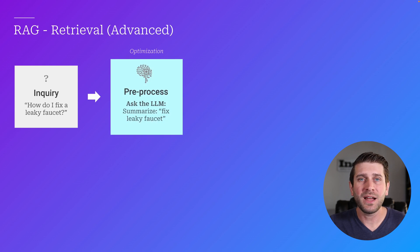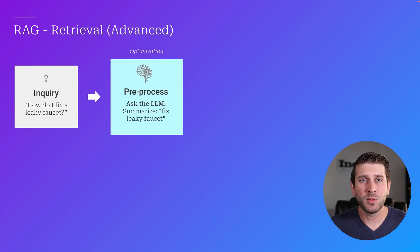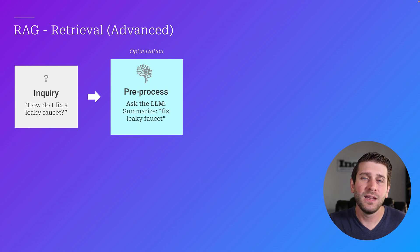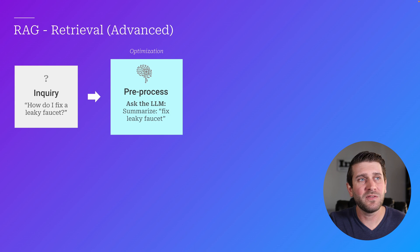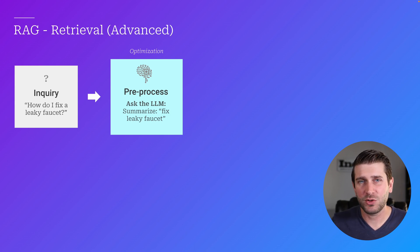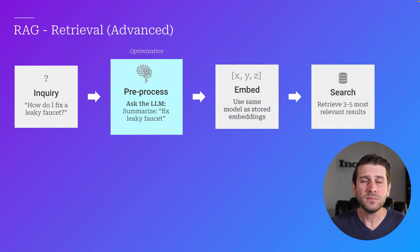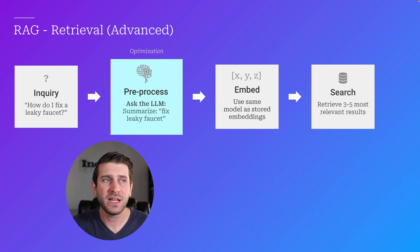The first one is to pre-process that inquiry into more of a topical key phrase that's more likely to match up with one of your chunks of data in the database. So if the question was how do I fix a leaky faucet, you could use an LLM to summarize it, and then your term would be 'fix leaky faucet' — which removes some of the fluff or extraneous parts that could be in the question. Then we create an embedding from it and search the database.